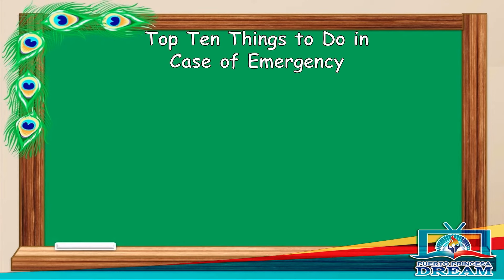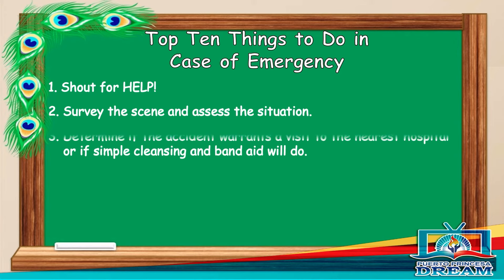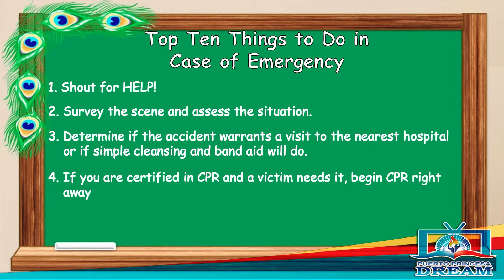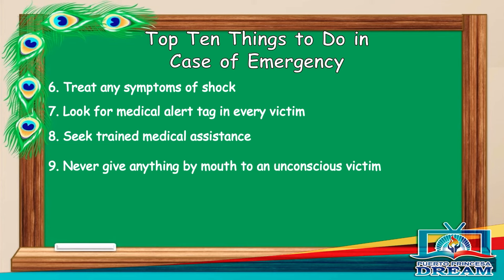Top 10 things to do in case of emergency: 1. Shout for help. 2. Survey the scene and assess the situation. 3. Determine if the accident warrants a visit to the nearest hospital or if simple cleansing and a band aid will do. 4. If you're certified in CPR and a victim needs it, begin CPR right away. 5. Stop the bleeding if there is any. 6. Treat any symptoms of shock. 7. Look for a medical alert tag on every victim. 8. Seek trained medical assistance. 9. Never give anything by mouth to an unconscious victim. 10. Wait for medical professionals to arrive.